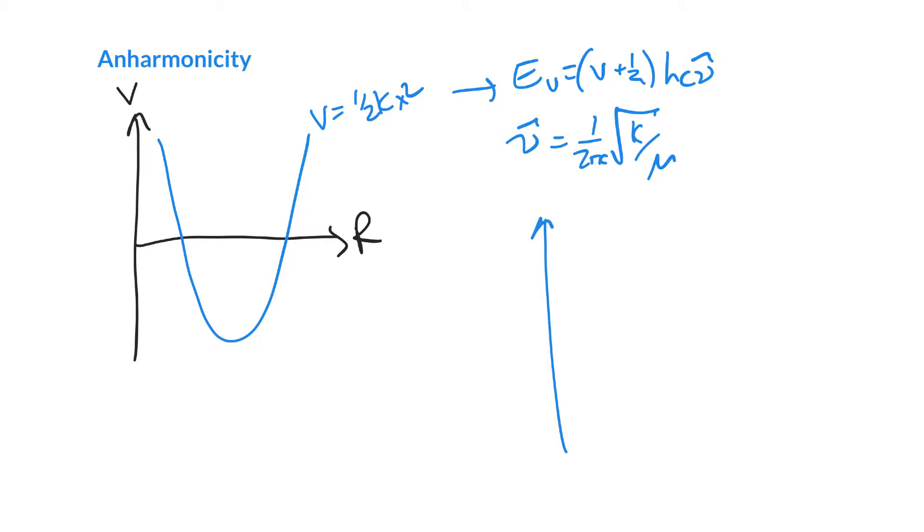That gives us that very nicely equally distant spacing in our energy levels. We've got an energy here equal to one half H C nu, and this one here three halves H C nu, five halves H C nu, and so on. So we've got that consistent energy spacing right here.